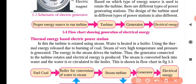The steam is converted back into water form and recirculated to the boilers. The steam will be cooled into water form. This process is shown in a flow chart in the figure.